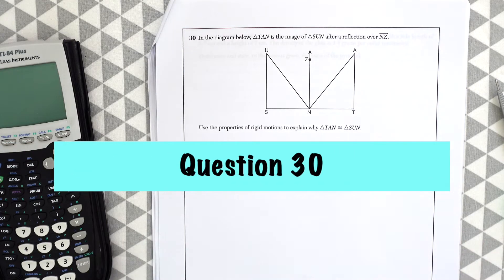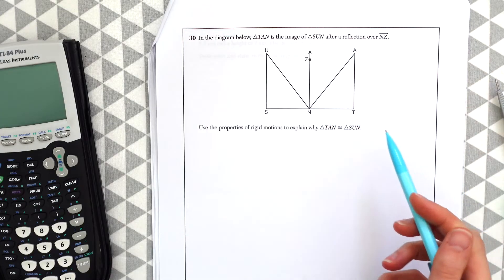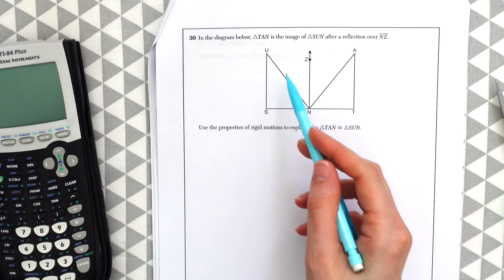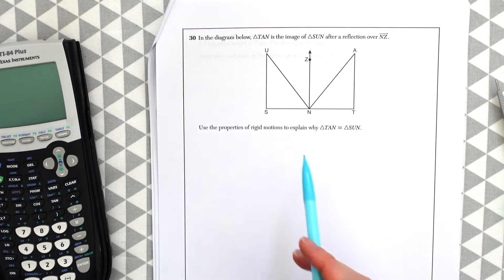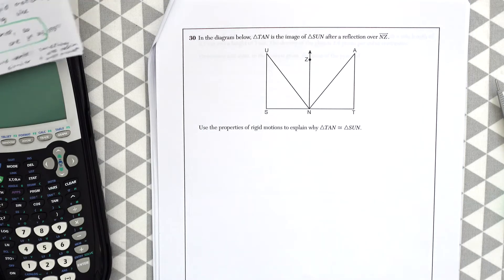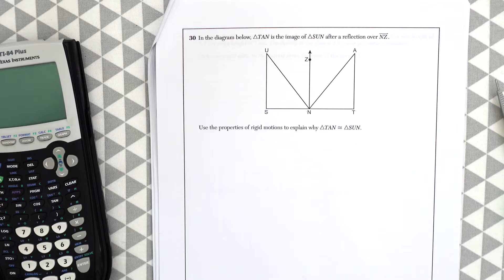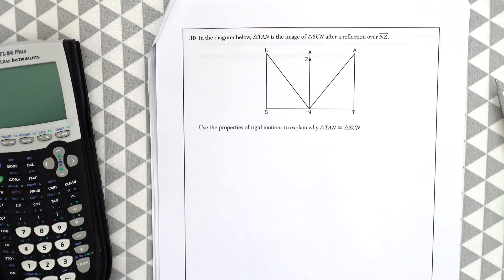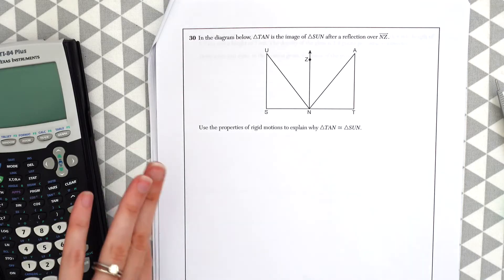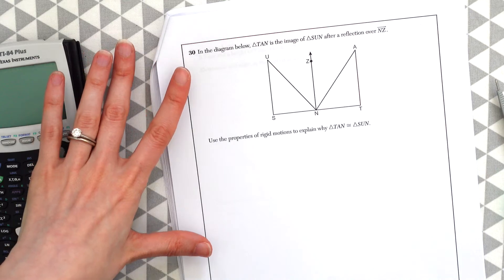Question 30. In the diagram below, triangle TAN is the image of triangle SUN after reflection over NZ. Use the properties of rigid motions to explain why triangle TAN is congruent to SUN. So the main thing here is that reflection preserves distance. That means the corresponding sides are all going to be congruent and the corresponding angles are going to be congruent. You just have to write a little something about this with the main idea about reflection preserving distance.